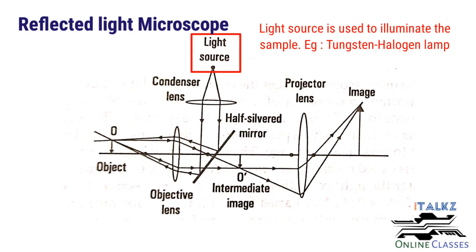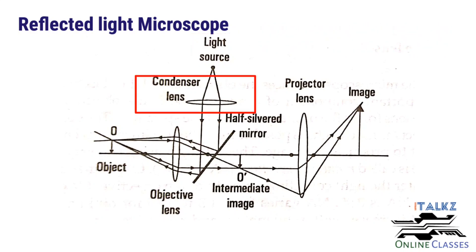In order to illuminate the sample, a light source can be used, for example, tungsten halogen lamp. It has very high light intensity. Then followed by a condenser lens, it is used to focus the light rays.